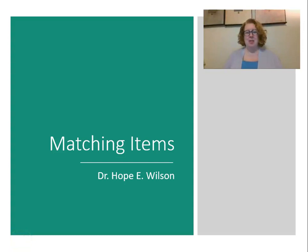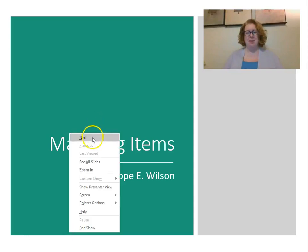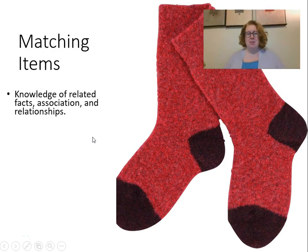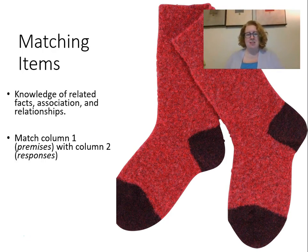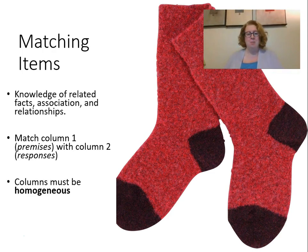Today we're going to be discussing how to write good matching items for your content knowledge instruments this week. Matching items consist of knowledge of related facts, associations, and relationships. You're going to match one column — the premises — with column 2, which we'll call the responses. The columns must be homogeneous. That's the key to writing a good matching item: both column 1 and column 2 should be homogeneous.